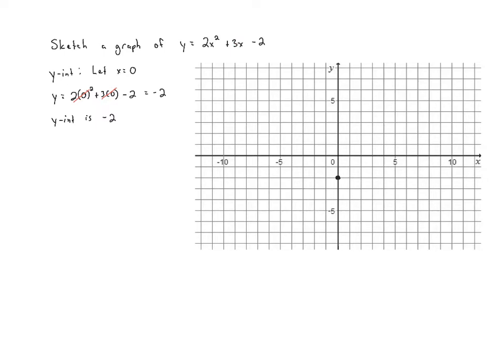So the y-intercept is always going to be equal to the constant term which we usually denote with the letter c. So if we have y equals ax squared plus bx plus c, the y-intercept is going to just be c. That's really nice because we can get that without doing any math. We just need to look at the equation that we're given. Next let's move on to the x-intercepts. These are going to be a little bit more work.